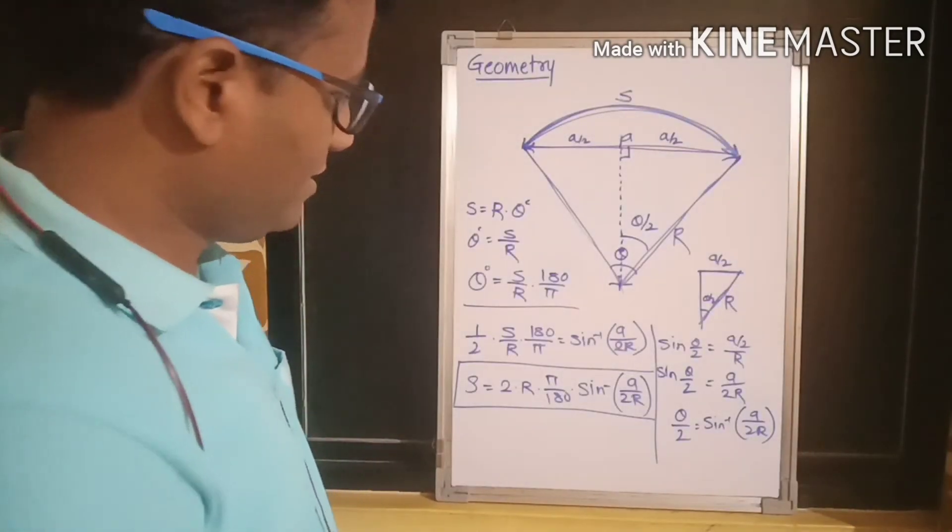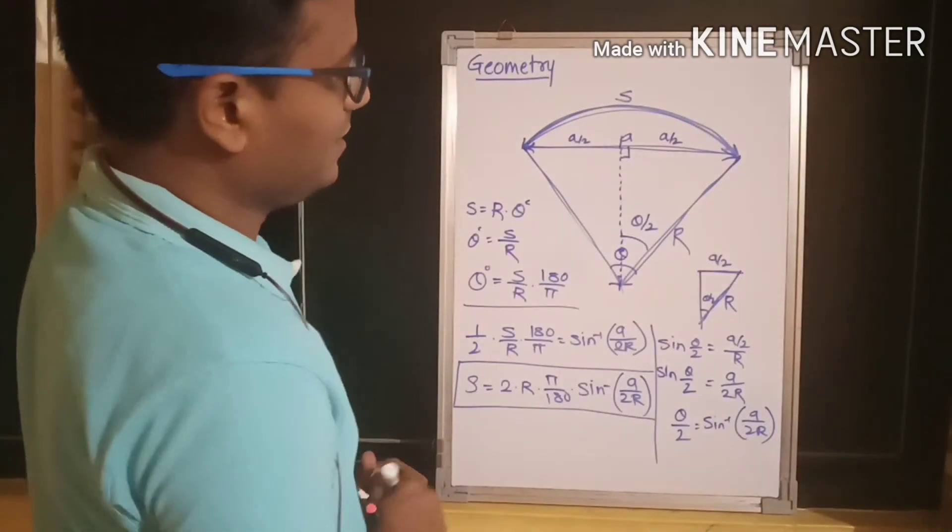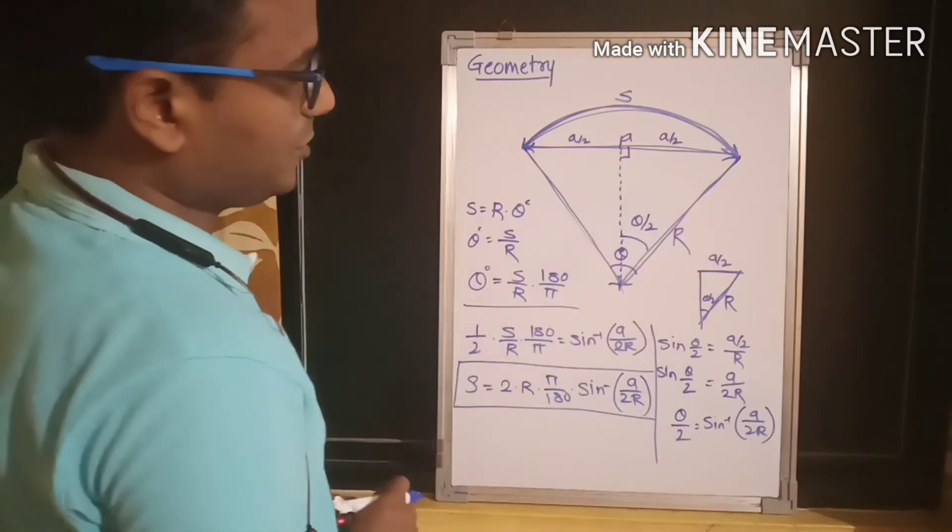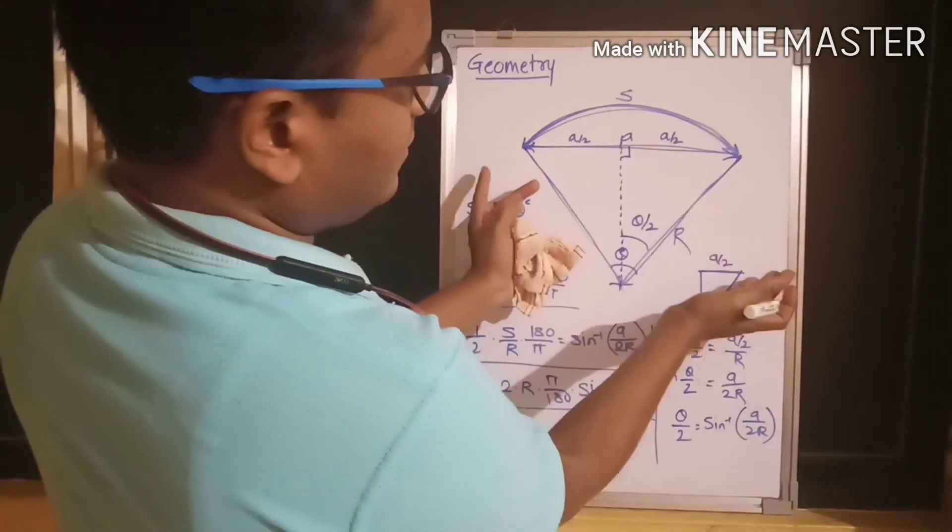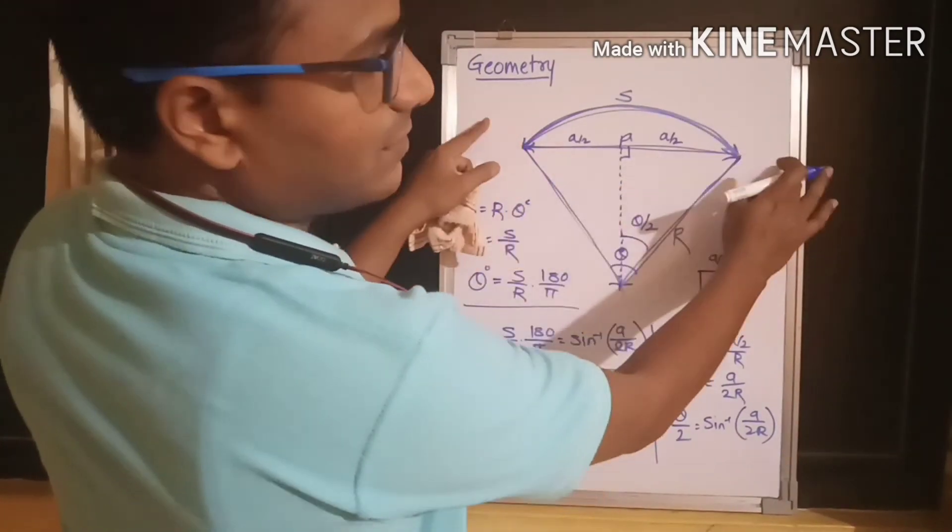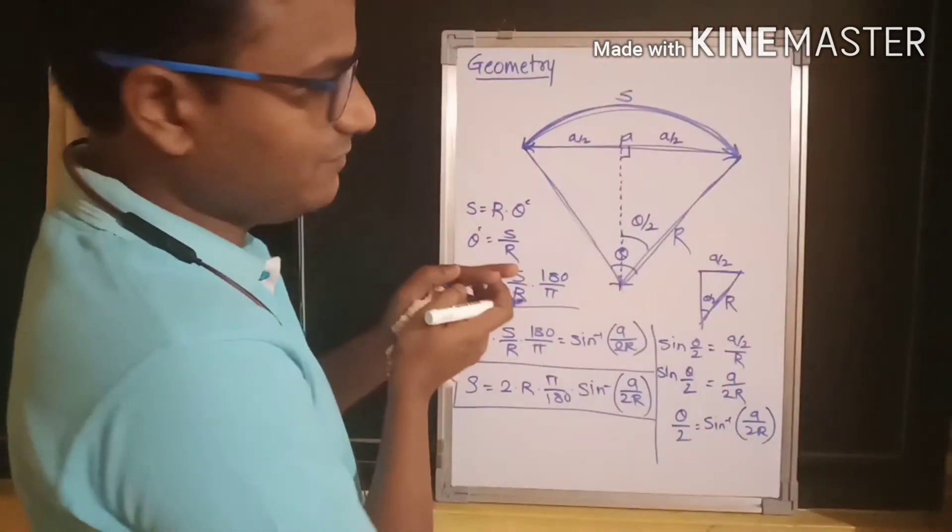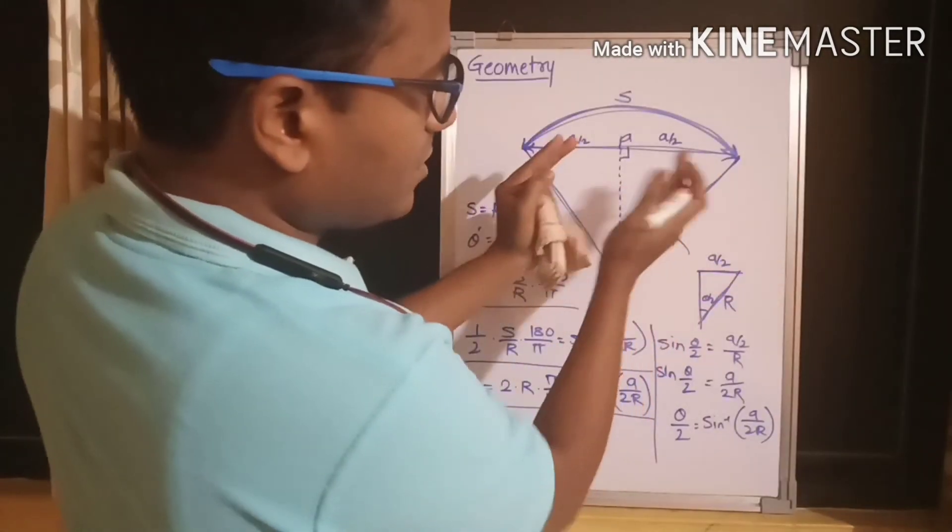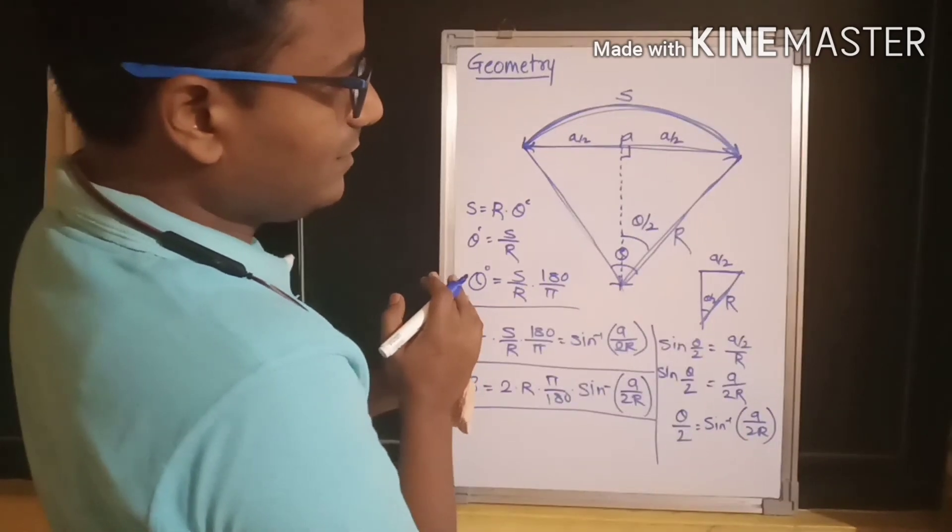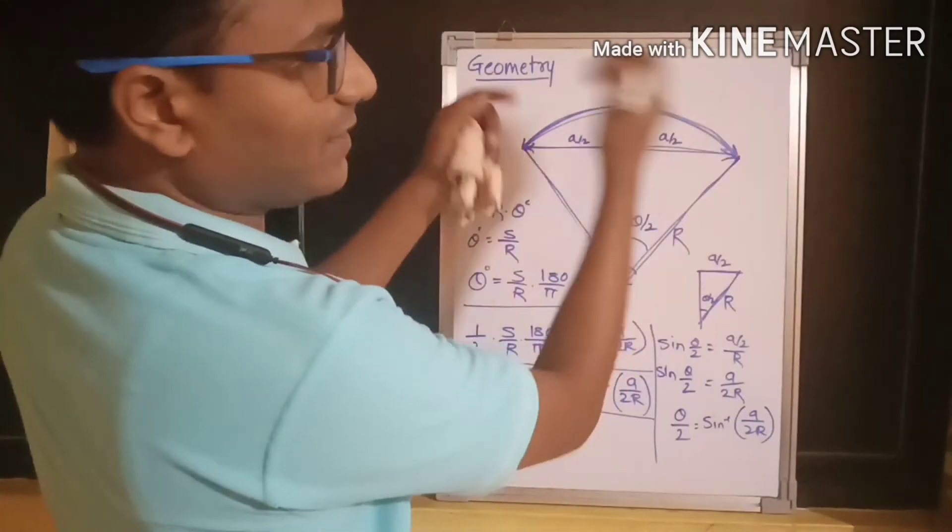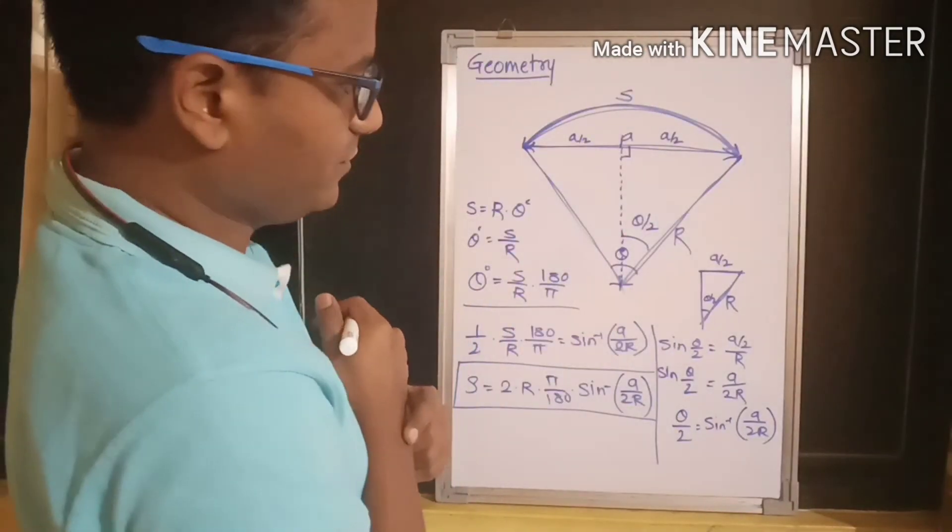If you see this equation, you can see, or even from the geometry you can see, you can see if you increase the included angle, the chord length will increase, the arc length will increase. If you reduce the included angle, chord length will reduce as well as the arc length will also reduce.